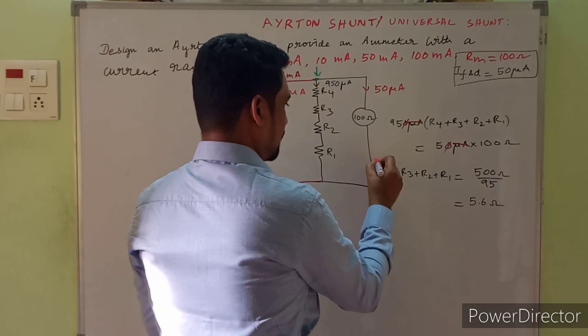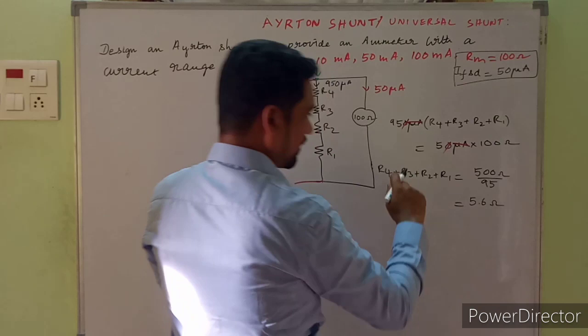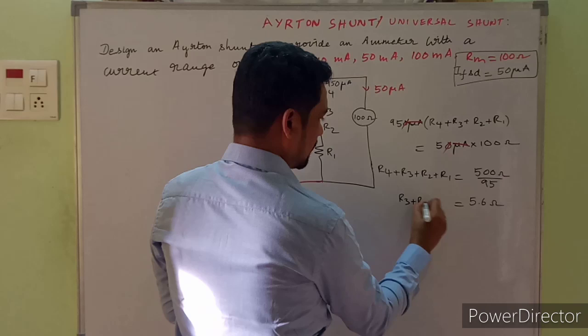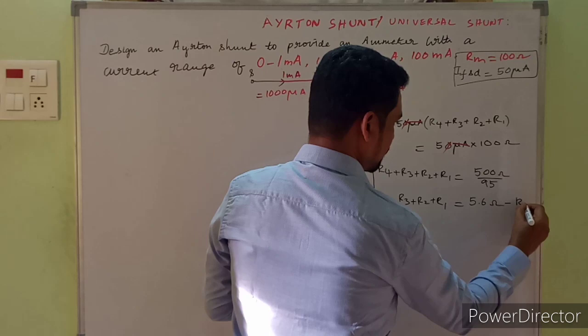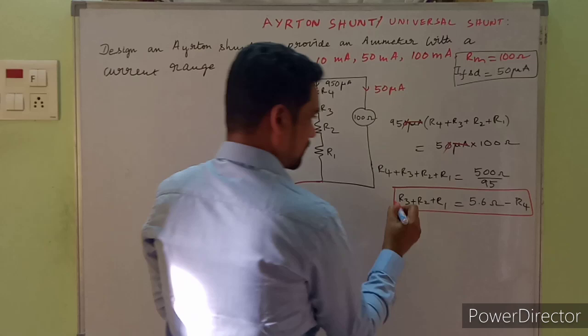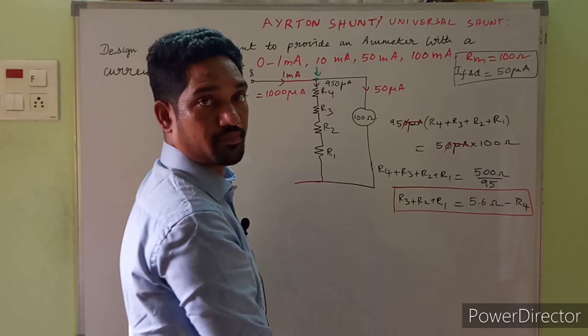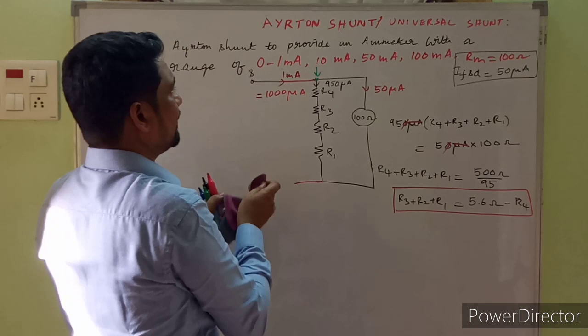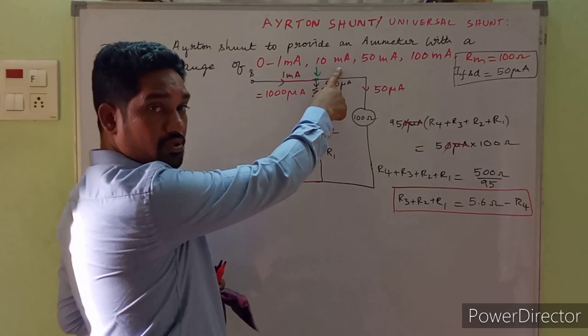This is an important equation. We can rearrange it: R3 + R2 + R1 = 5.26 − R4. We can evaluate one unknown using this equation. Now moving to the second range.